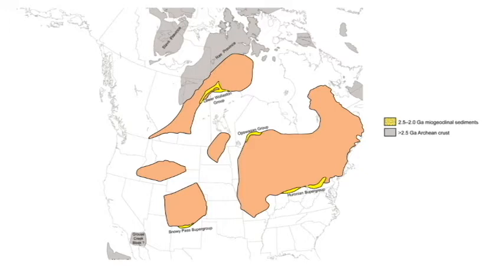The Ray Province and Slave Province won't be discussed in detail because I'm focusing on the period from 2.5 to 1.8 billion years ago. The Snowy Pass Supergroup and Huronian Supergroup are our main focus, along with the lower Wollaston Group and — I can never pronounce it — the Opswagon Group in the middle of Ontario. These are also metasediments, and they're key to reconstructing where the continent was 2.5 billion years ago.